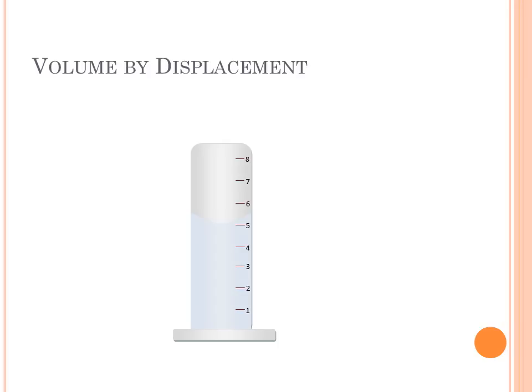For example, if we have a graduated cylinder, we can have a volume that's the initial volume. If we put in an irregularly shaped object, the volume increases by a set amount.